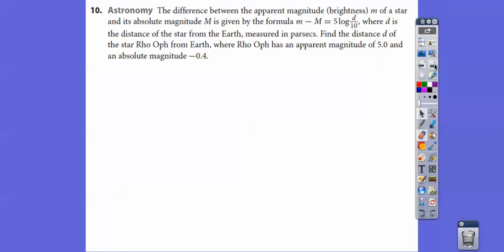Let's try one more. This is number 10. The difference between the apparent magnitude brightness M of a star and its absolute magnitude capital M is given by this formula: M minus big M equals 5 log of D over 10. This is base 10 because there's no base there, where D is the distance of the star from Earth measured in parsecs. Find the distance D of the star Rho Oph from Earth, where Rho Oph has an apparent magnitude of 5.0 and an absolute magnitude of negative 0.4. Let's plug those in.